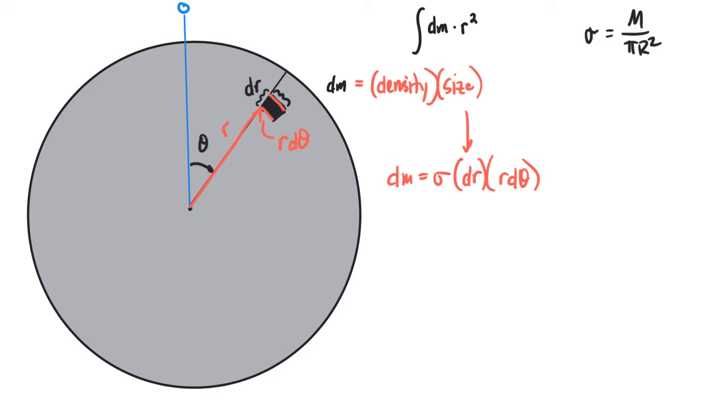Okay, so, now that we have pointed directly to our piece of mass, and now that we have found a way to express the size of that piece of mass in terms of our pointer, we can now assemble our integral.